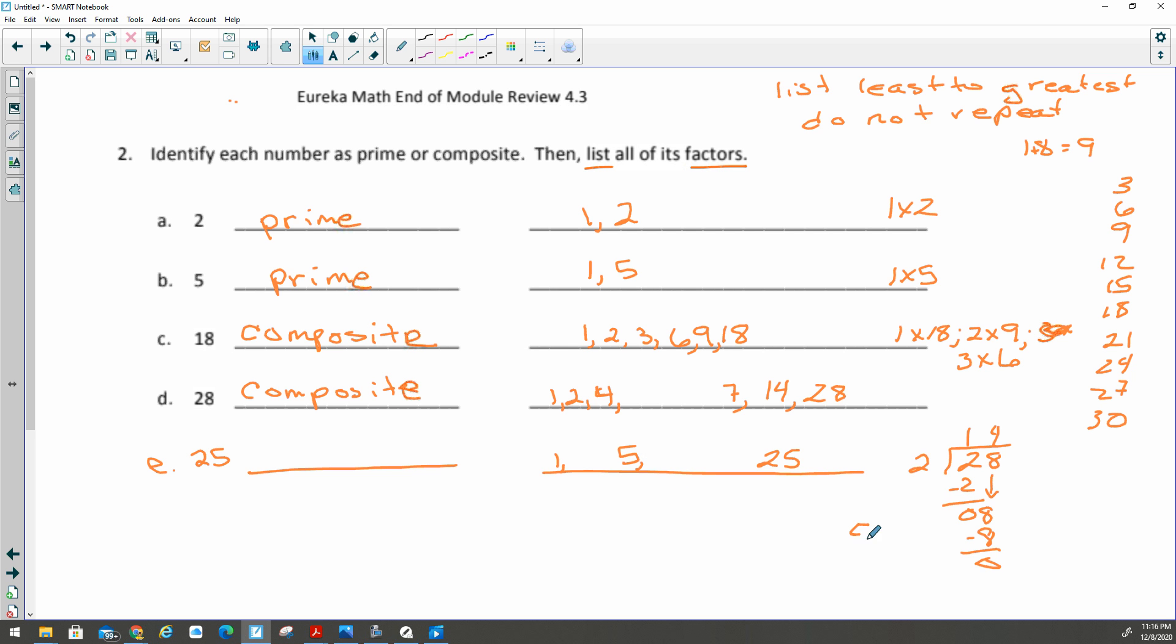Because 5 times 5 equals 25. And this is what I mean by don't repeat it. So your answer for the list of factors is actually just those 3 numbers: 1, 5, 25. You do not write the 5 twice. That's what I mean by do not repeat.